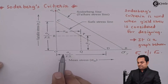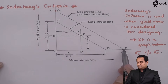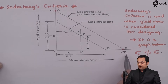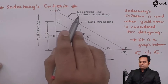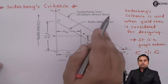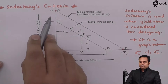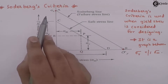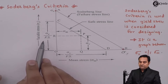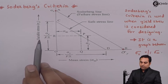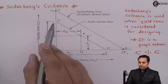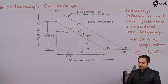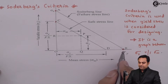On the x-axis, the maximum point is B, where the value of stress is sigma_y, called the yield stress. Joining A to B gives us a line called the Soderbergh line, also called the failure stress line. Next, we reduce sigma_e by dividing it by the factor of safety (FOS), since FOS is greater than one. So sigma_e divided by FOS causes point A to shift to point C.